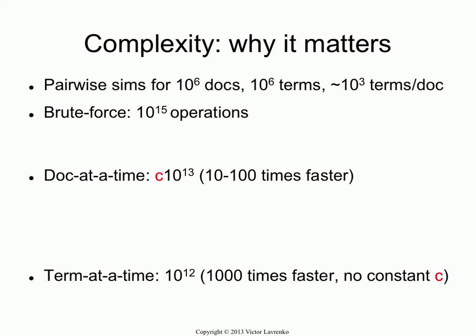So I'm doing pairwise similarities. A million documents, I'm assuming a vocabulary of a million distinct terms, and I'm assuming on average about a thousand terms per document. So how many operations — how costly is it to do it in the ways that we know how to do it? So the simplest way, brute force: you take every document and compare it to every other document, the way you did in coursework one.